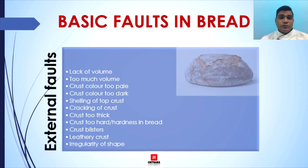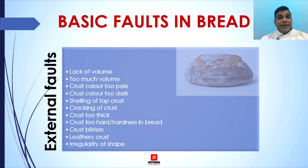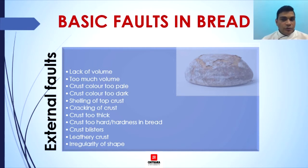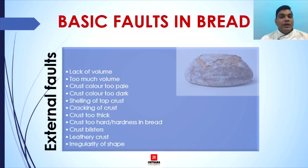Next is too much volume. Dough with low salt content can lead to excess volume. Excess final proofing, loose molding, and excessive salt that decreases the stability of gluten are also causes. Excessively slapped dough also produces bread with excess volume, which can be adjusted by altering the proving time. A cool oven causes fermentation to continue in the oven, resulting in too much oven spring and excess volume.